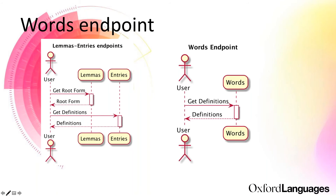Before we had the words endpoint, if you wanted to get a definition of a word, you first had to get the root form from lemmas. So if you have the word 'was' and want to get its definition, first you need to send a request to lemmas — lemmas will tell you the root form is the verb 'be' — and then you can get the definitions. In contrast, with the words endpoint you just need one request to get the definition: send a request to the words endpoint for the word 'was,' and the endpoint gives you all the definitions for that word.